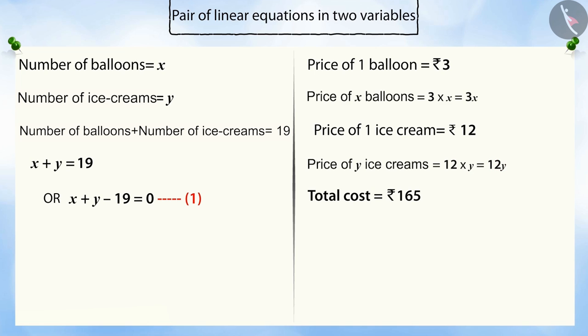And the total spent on these two is rupees 165, that is, 3x plus 12y, which is equal to 165.